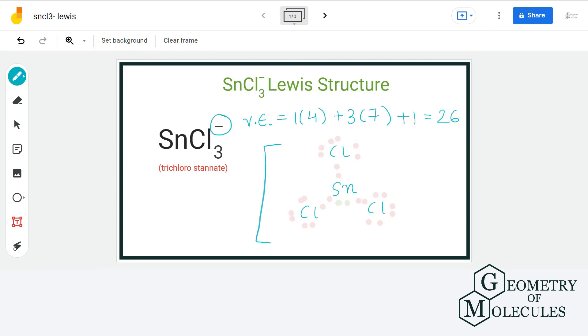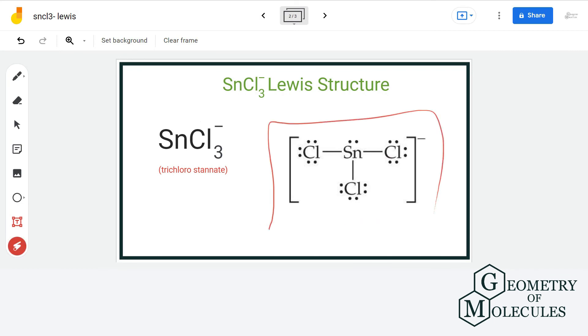Also, SnCl3- is an ion, so we will enclose it within a bracket. So this is the final Lewis structure of SnCl3- ion.